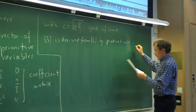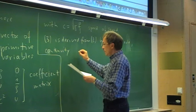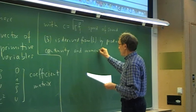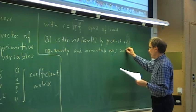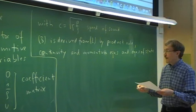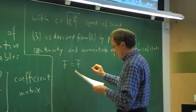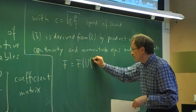We also use the continuity equation and the momentum equation to simplify, and we use the equations of state for perfect gas. We work here with a perfect gas, so c is gamma times the ratio of specific heats times pressure over density — that is the speed of sound. The non-conservative form is derived from the conservative form by the product rule, using the continuity and momentum equations, and the equation of state.